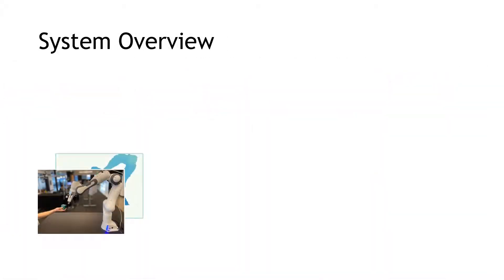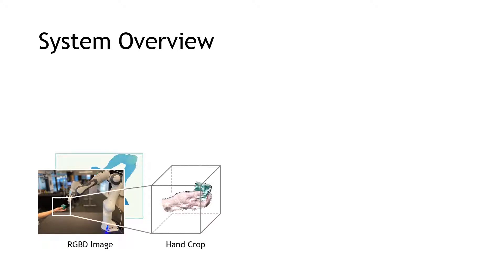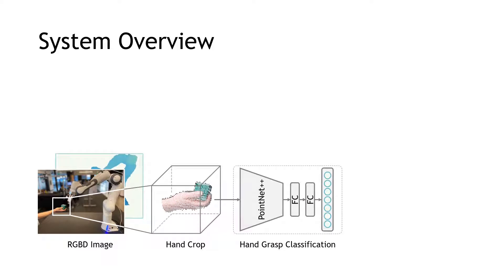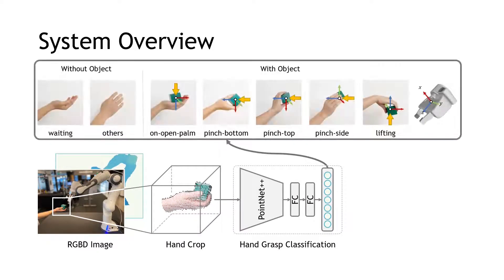Here is an overview of our human-to-robot handover framework. Given an RGBD image, we first use the Azure Kinect body tracking SDK to detect the hand. Then we crop the point cloud centered around the hand and feed the cropped point cloud to a PointNet-based network to predict the grasp category of the given observation.